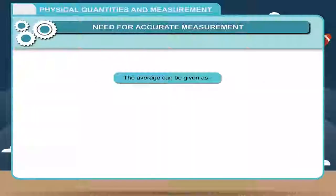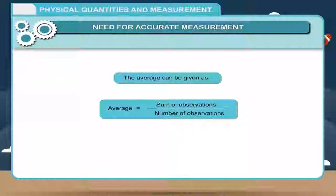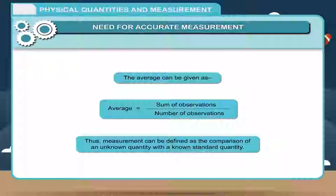The error in measurement inside a laboratory can be minimized by taking the average of measurements. The average is equal to the sum of observations divided by the number of observations. Thus, measurement can be defined as the comparison of an unknown quantity with a known standard quantity.